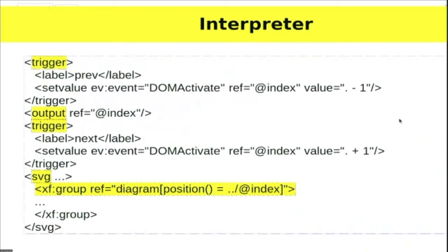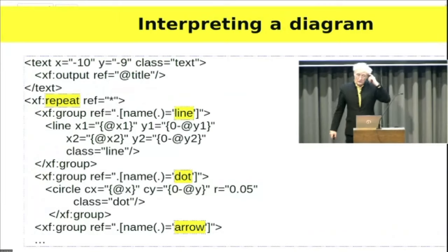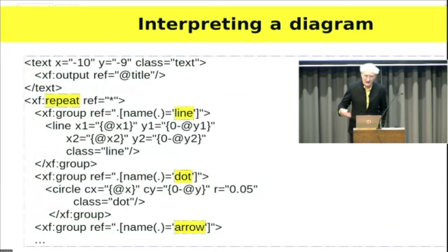Then I have my interpreter. I have two triggers for going between different diagrams, and then a bunch of SVG which interprets the current diagram. There's an index value which I update with the triggers, and the SVG displays the current diagram. I take the title and display it at the top, then do a repeat over all the elements within my diagram — if it's a line I do something, if it's a circle I do something else, if it's an arrow I do something else.